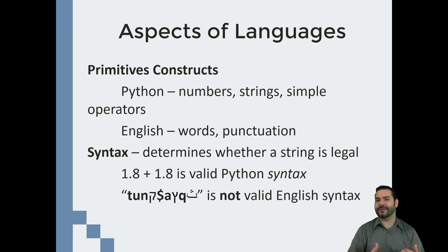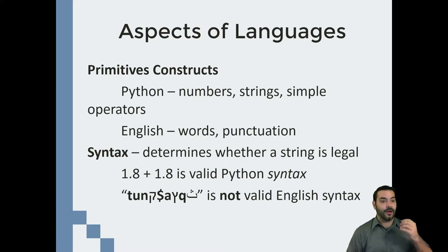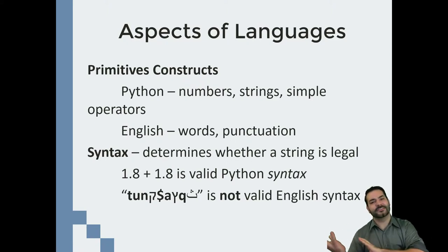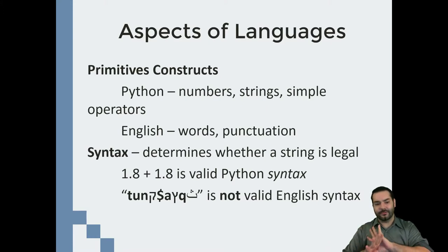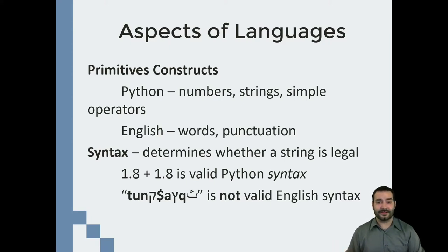This is where we get into syntax. Something like 1.8 plus 1.8 — that is valid Python syntax. That's a number, an operator, a number — something the computer considers valid. However, if you look at the word I've written down here, this is actually not valid English syntax. There are a lot of symbols that are not from the English language, and furthermore, that's not really a word in English.